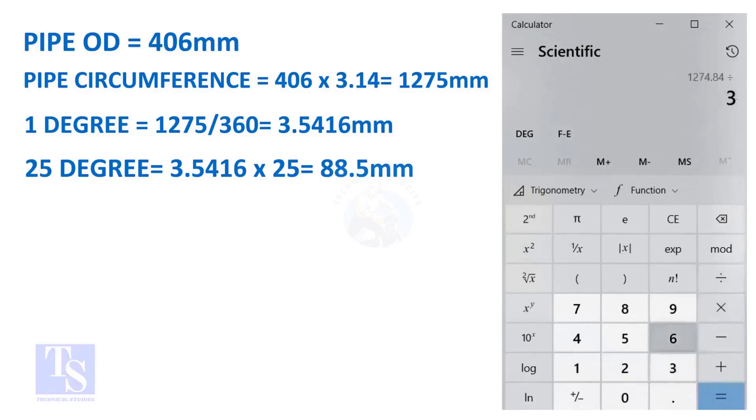And finally, multiply the 1 degree arc length by 25. Now you have the arc length of 25 degrees. You can apply this formula to get the arc length of any degree.